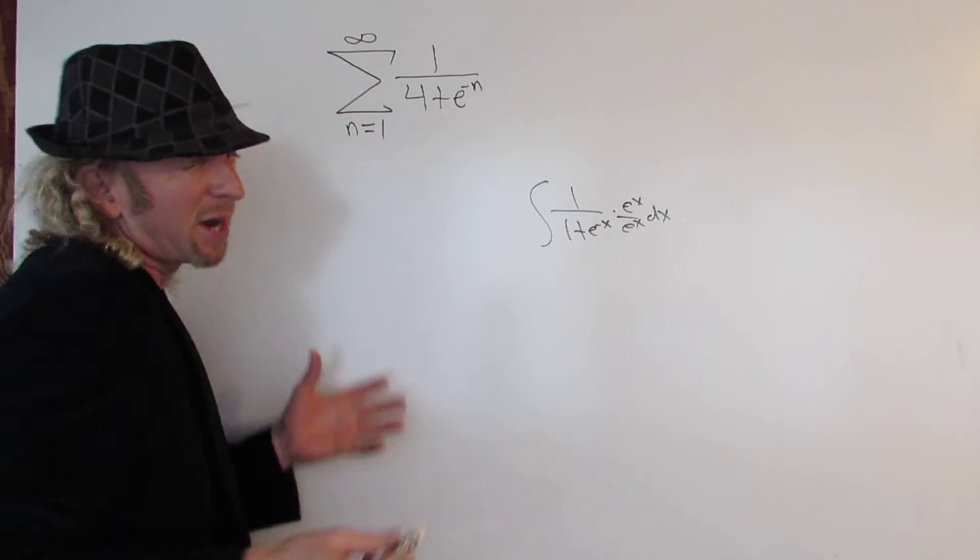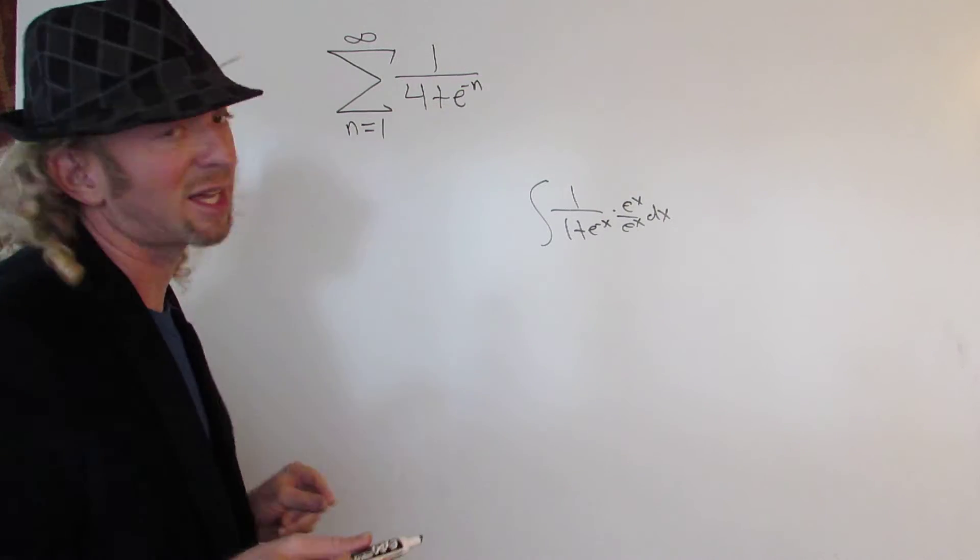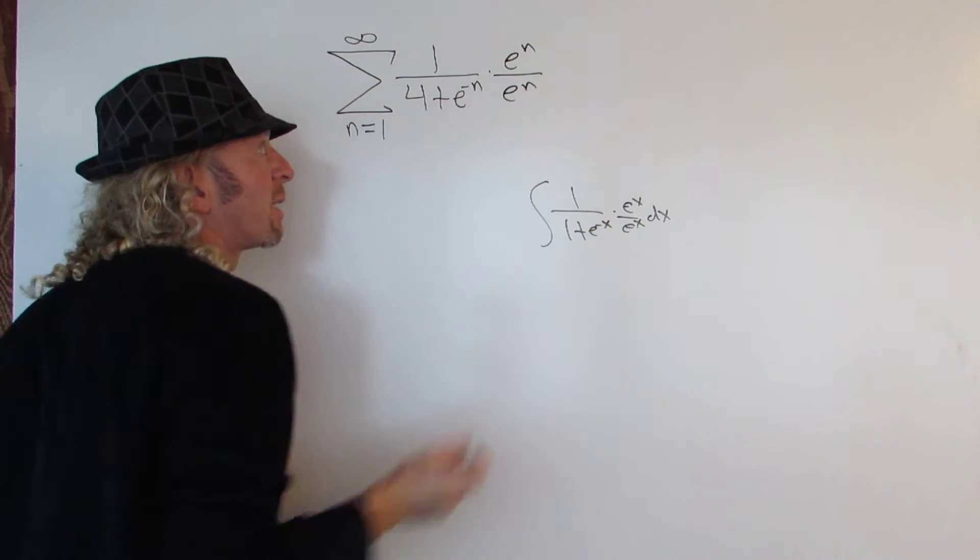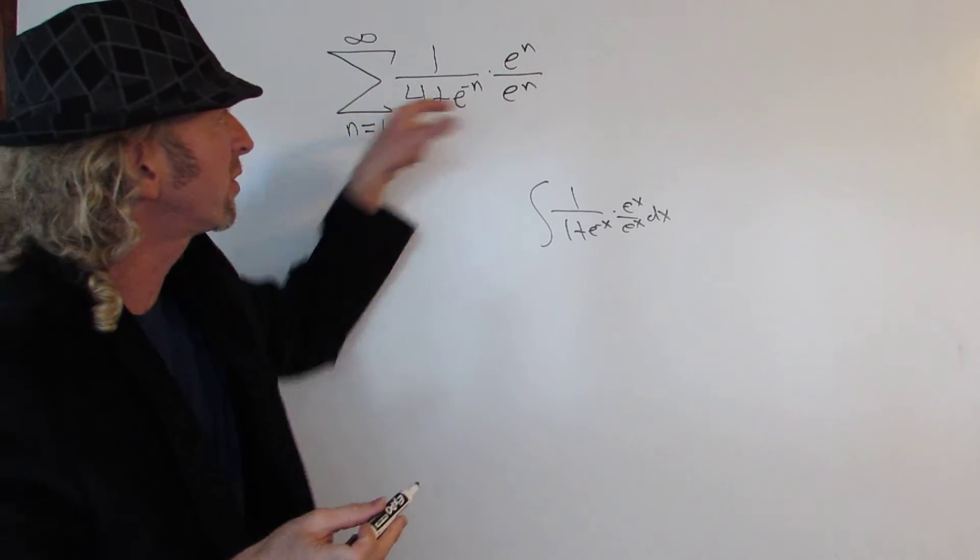Same thing here, except we're not going to make a substitution. We can eliminate that e to the negative n by multiplying by e to the n over e to the n. That's how pros do it. e to the n over e to the n.